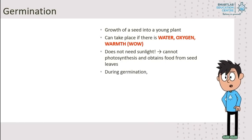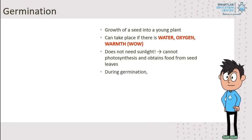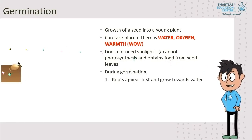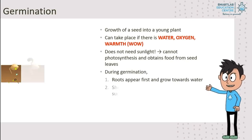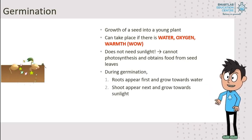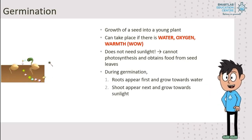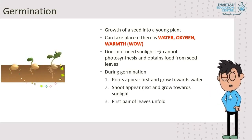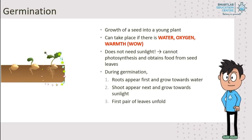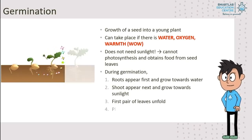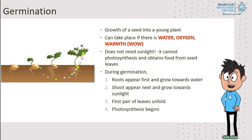During germination, the roots appear first and grow towards water. The shoot appears next and grows towards sunlight. Afterwards, the first pair of leaves unfold. Lastly, photosynthesis begins.